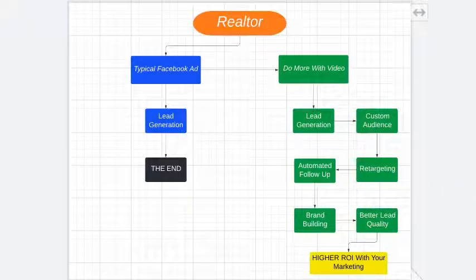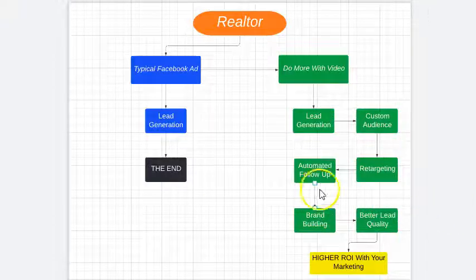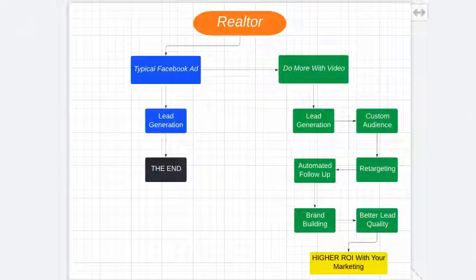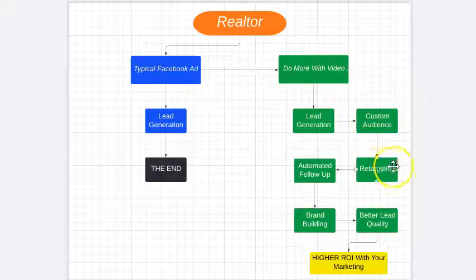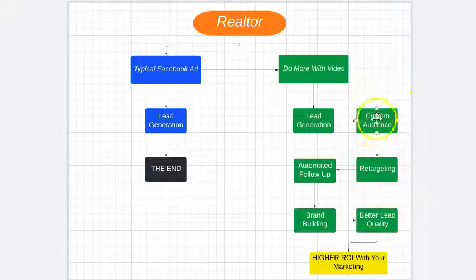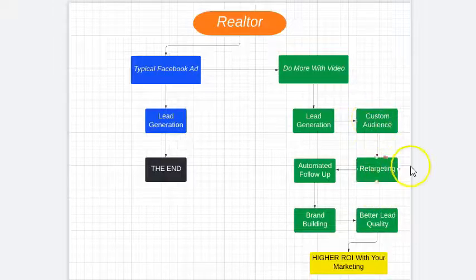Retargeting works like an automated follow-up system for you inside Facebook, and it's really inexpensive to do. Let's say you run that ad and generate a custom audience of 3,000 local homeowners. Facebook allows you to use a retargeting ad — an ad seen only by these 3,000 people. So you can target them and call them out — you know who's in this audience and who will see this ad.